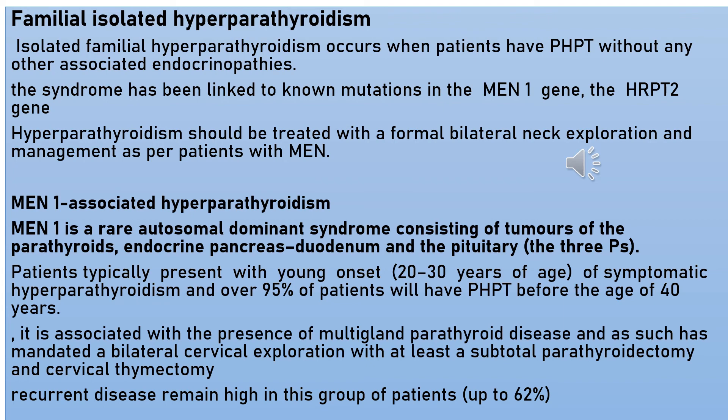Regarding familial causes of primary hyperparathyroidism, first is familial isolated hyperparathyroidism, which occurs when patients have primary hyperparathyroidism without any other associated endocrinopathies. The syndrome has been linked to known mutations in the MEN type 1 gene and the HRPT2 gene. Hyperparathyroidism should be treated with a formal bilateral neck exploration and managed as per patients with multiple endocrine neoplasia.